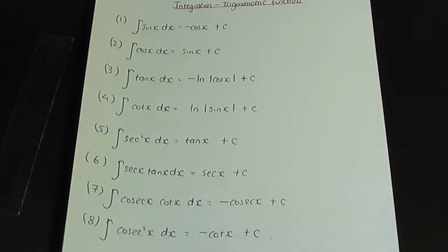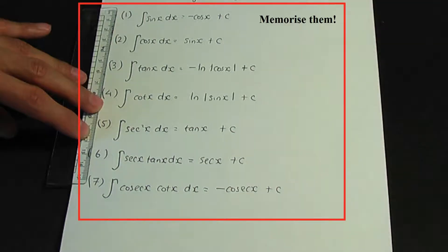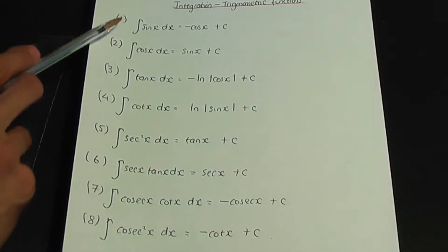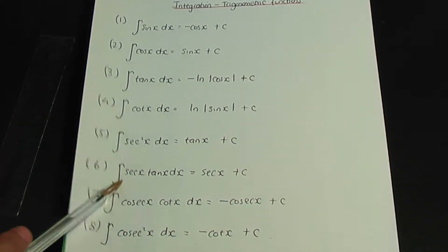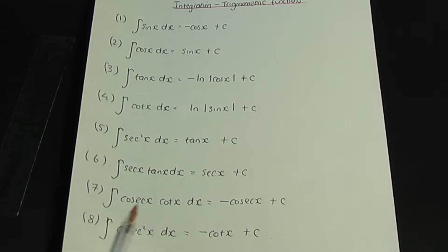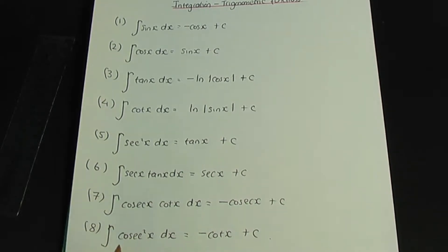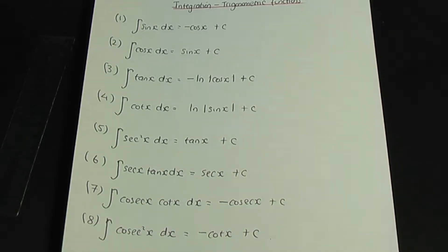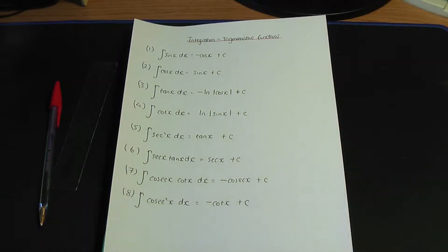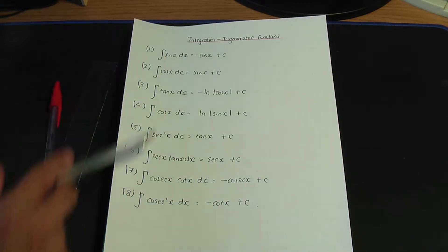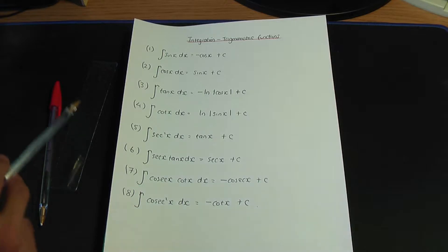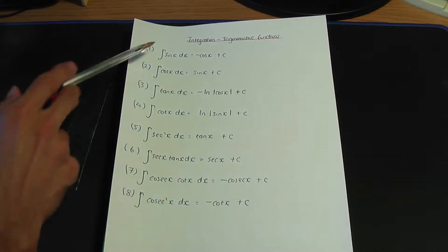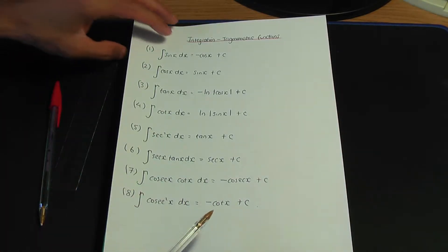So here are the eight standard results: the integration of sin, cos, tan, cot, sec squared, sec x tan x, cosec x cot x, and cosec squared x with respect to x. Based on these standard results, let me give you some additional related results, which are based on these standard results.